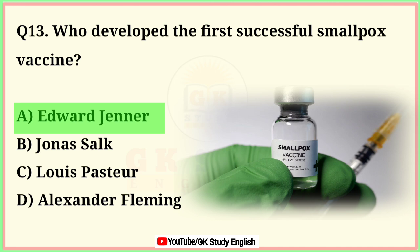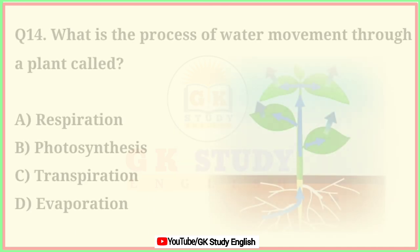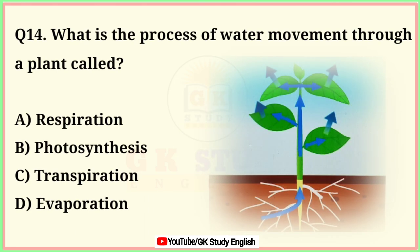Question number 14. What is the process of water movement through a plant called? A. Respiration. B. Photosynthesis. C. Transpiration. D. Evaporation. Correct answer is option C. Transpiration.